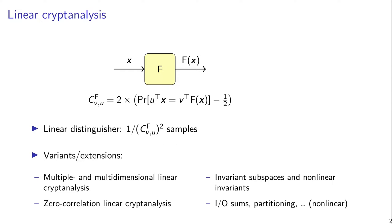so that's something of the form u transpose x, where u is a mask which is essentially a bit vector, and a linear combination of output bits. And we want to know what the probability is that this linear combination of input bits is equal to that linear combination of output bits for a uniform random input.